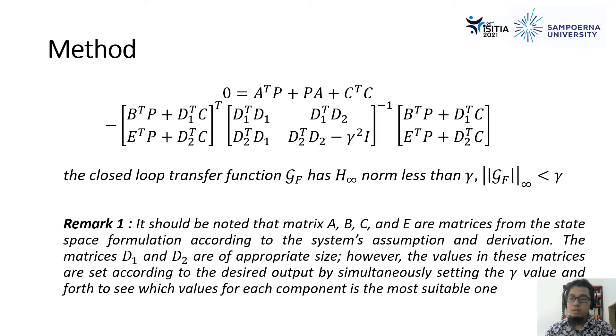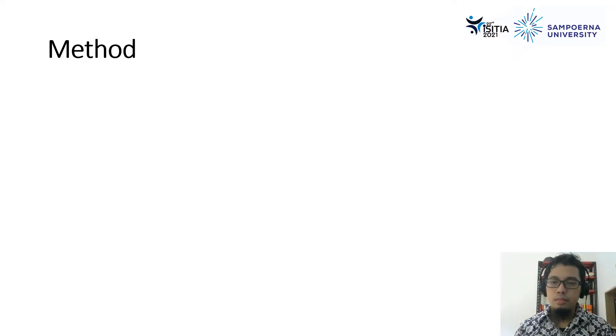And then as the remarks, to make the theorem solid, it should be noted that the matrices of A, B, C, and E are the matrices from the state-space formulation according to the system assumptions and derivation. The matrices D1 and D2 are the appropriate size. However, the values in these matrices are set according to the desired output. By simultaneously, we need to set the value of the gamma as one.